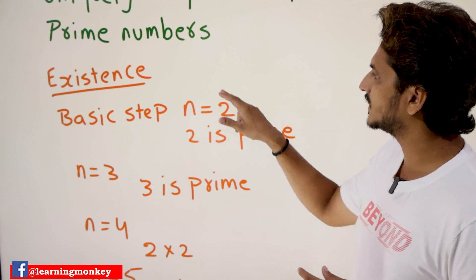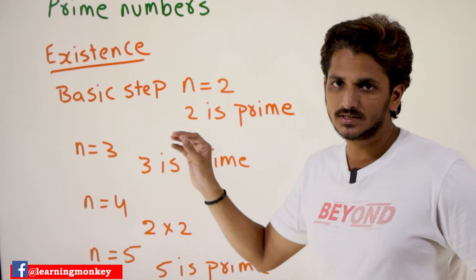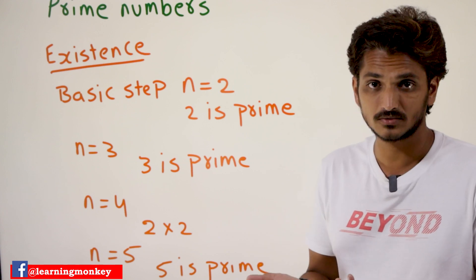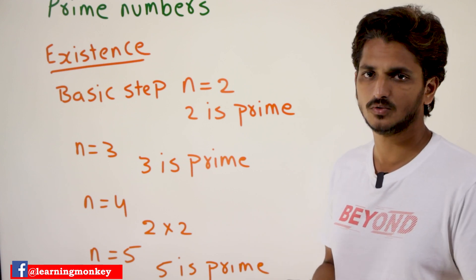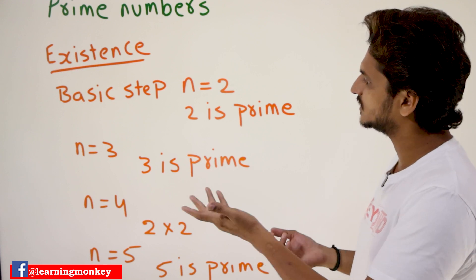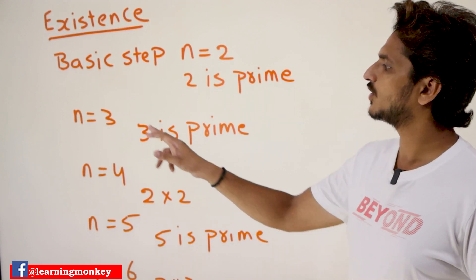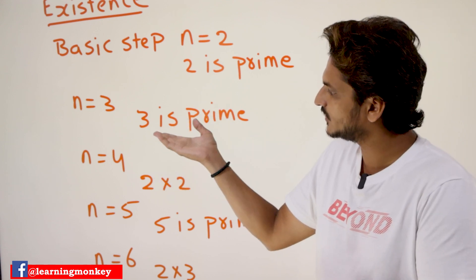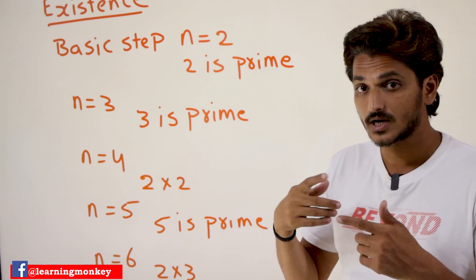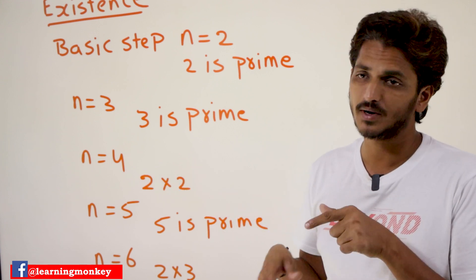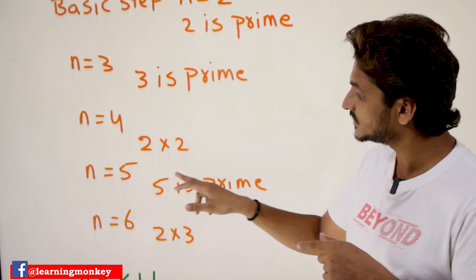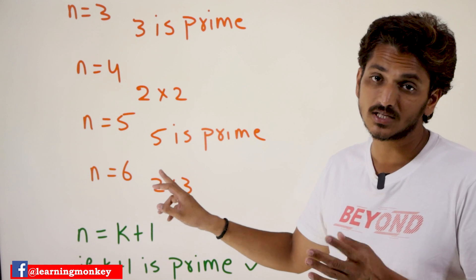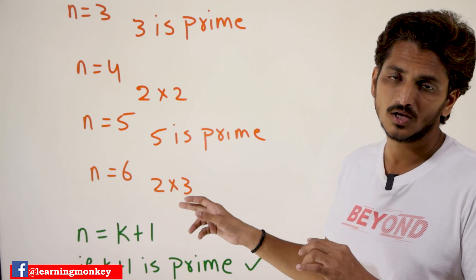Let's try to understand the existence part using the mathematical induction method. We take the basic step. Take n = 2: two is a prime number, so we express it as two itself. n = 3: three is a prime number. n = 4: four can be expressed as 2 × 2, a product of prime numbers. Similarly, n = 5 is a prime number, and n = 6 can be expressed as 2 × 3.